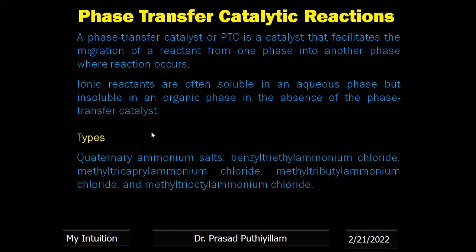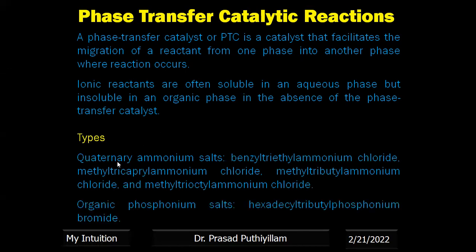The types of phase transfer catalyst: there are two main types — quaternary ammonium salts and organic phosphonium salts. Examples of quaternary ammonium salts include benzoyl triethyl ammonium chloride, methyl tricapryl ammonium chloride, methyl tributyl ammonium chloride, and methyl trioctyl ammonium chloride. The organic phosphonium salt PTC includes hexadecyl tributylphosphonium bromide.